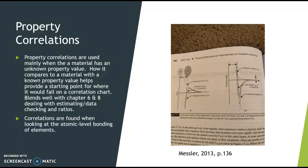Engineers compare that material and its unknown property with a known material's property value, which provides a starting point for where it would fall on a correlation chart to better determine whether they'd want to use it. This would also be really handy when looking at eliminating high-cost materials and finding additional materials at a lower cost that still have the same strength or melting point. This concept blends well with chapters six and eight, which deal with estimating, data checking, and ratios.